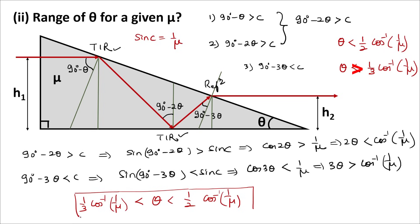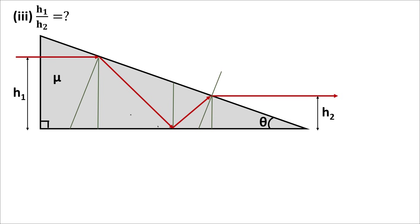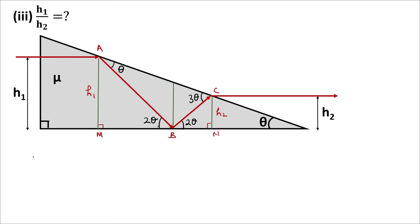Now for the demagnification ratio. Writing only the important angles found initially: this angle was theta, this angle was 2 theta, this angle is also 2 theta, and this angle is 3 theta. The initial height of the ray from the base is h1 and the final height of the emerging ray from the base is h2. Let me name these points A, B, C, M, and N. In right-angle triangle ABC, sin2θ = h1/AB.